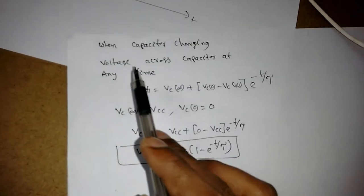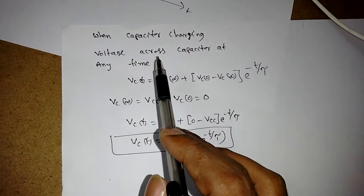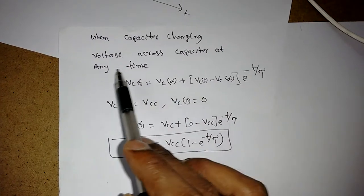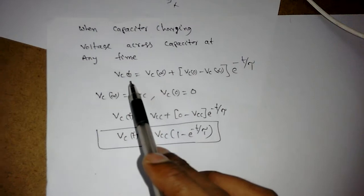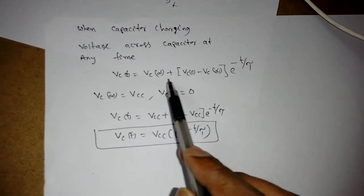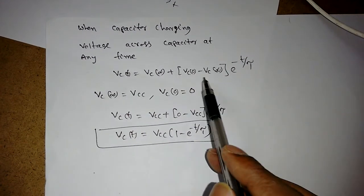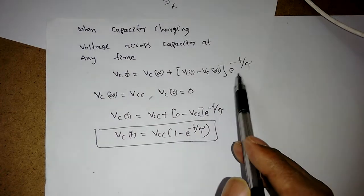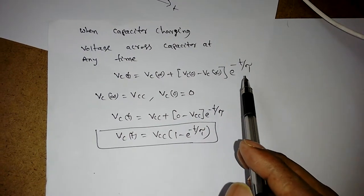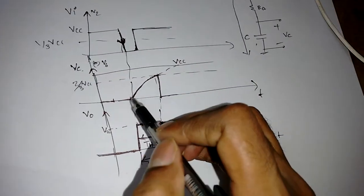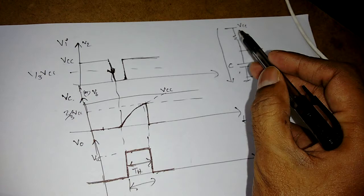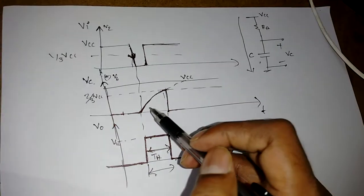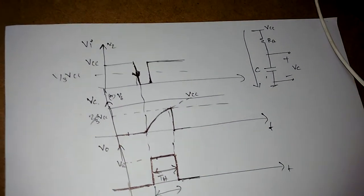From basic network analysis, the voltage across a capacitor at any time is given by: Vc(t) = Vc(∞) + [Vc(0) - Vc(∞)]·e^(-t/τ), where τ is the time constant. In monostable operation, when charging, the capacitor can reach a maximum of VCC and starts from a minimum of zero volts.